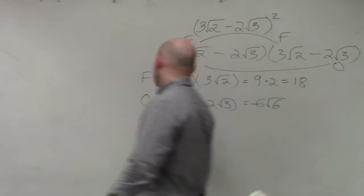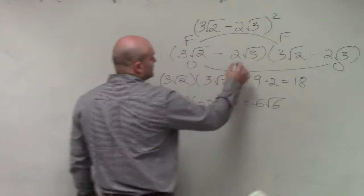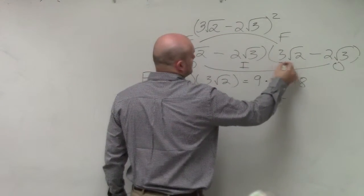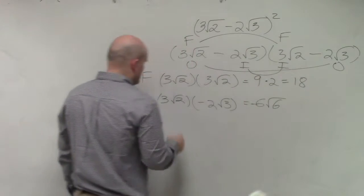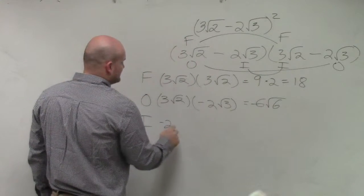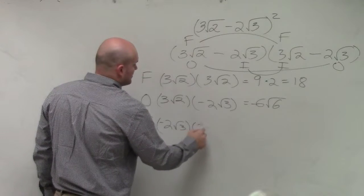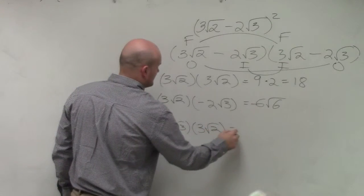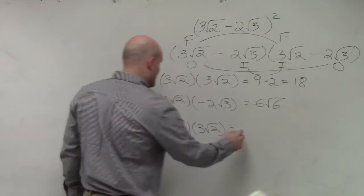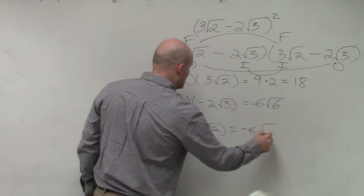Then the next one in FOIL is your inner. So to multiply my inner, I do negative 2 square root of 3 times 3 square root of 2. So that gives me a negative 6 square root of 6.